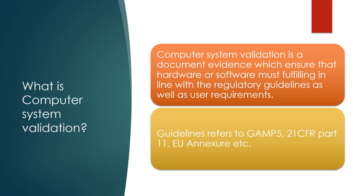The particular system is also complying with user requirements. User requirements are the set of requirements that the user has, and those requirements are covered in the validation document, which states that the user requirements are covered in the software or hardware as well. In simple terms, computer system validation is documentation evidence presented to auditors showing that the software or hardware fulfills all regulatory guidelines and user requirements. The different guidelines include GAMP 5, 21 CFR Part 11, and EU Annexure 11, among others.